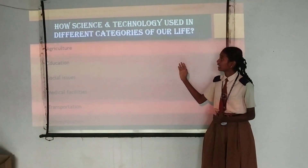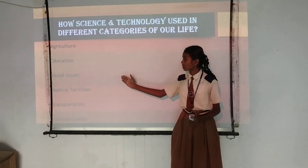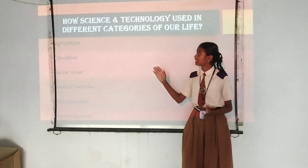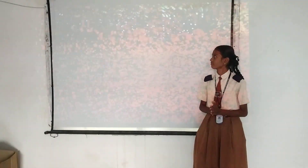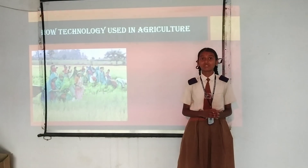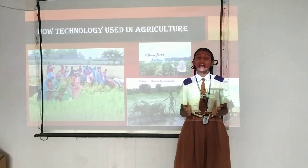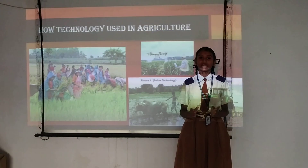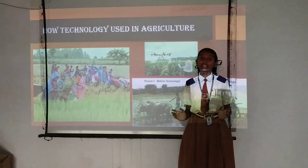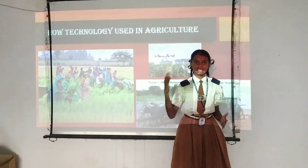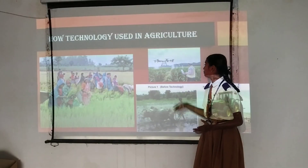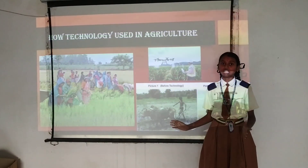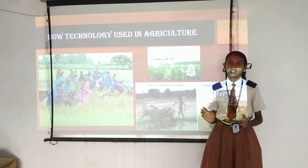Science and technology uses different characteristics in our life across agriculture, education, social issues, medical facilities, transportation, and communication. In agriculture, instruments such as machines, power tillers, and power sprayers are available at a subsidy rate of 25% of equipment cost. In ancient times, farmers calculated crops in an organic manner without machines. Today, farmers use many modern tools for cultivation. This picture shows the contrast between before and after technology, showing how technology has occupied a significant place in agriculture.